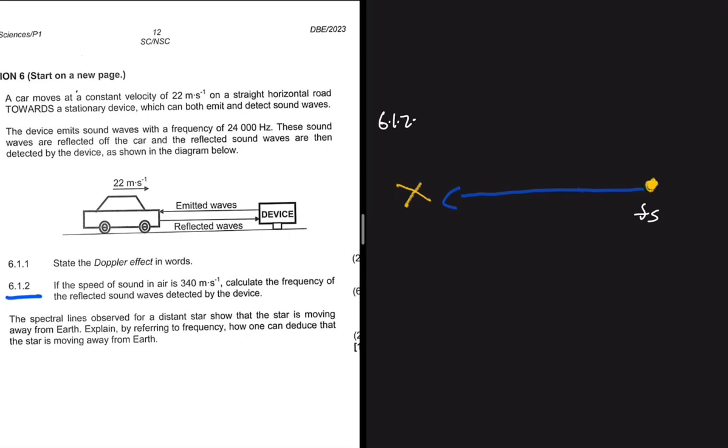We have some frequency of source, fs, and when it strikes the car it's going to detect a totally different frequency, fl. Then from that frequency it detects, it's now going to reflect it and send it back to the device.